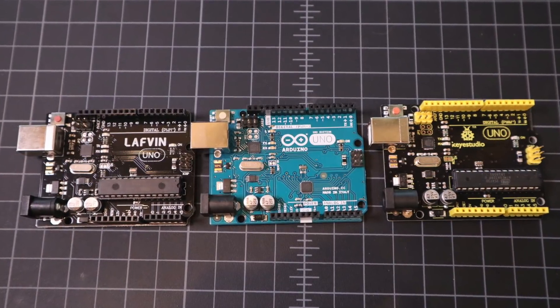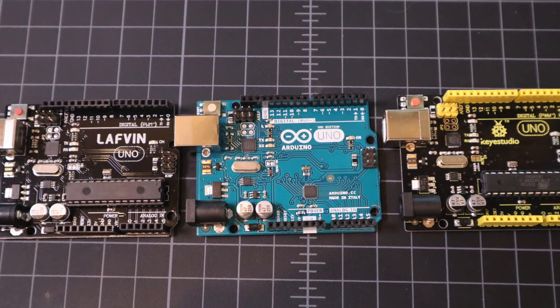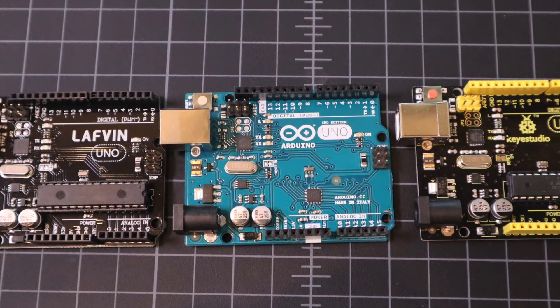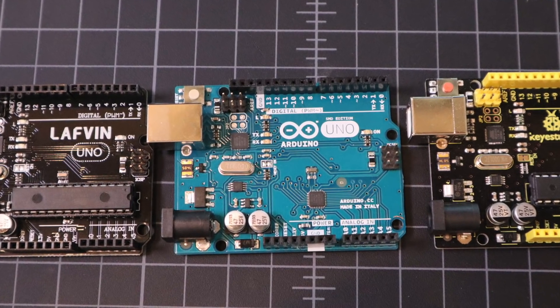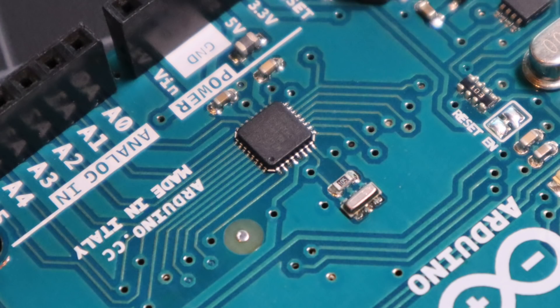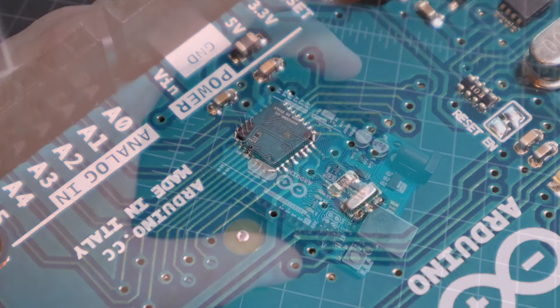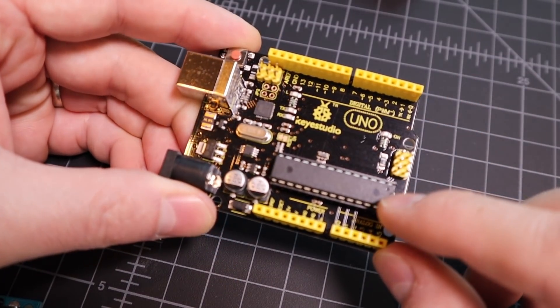Now that we know what an Arduino is, let's take a tour of one. We'll first look at the Arduino Uno, as I believe it is the most common Arduino you'll find. At the heart of the Arduino Uno is a microcontroller. This particular Uno has a surface mount Atmega 328p, but many Unos will have a through-hole style microcontroller, like this one for example.